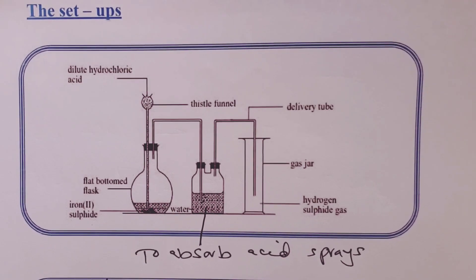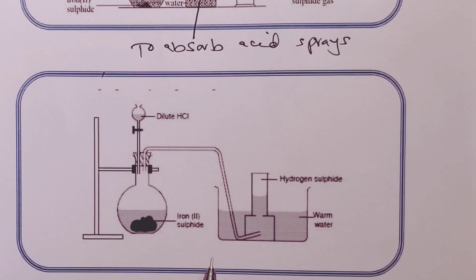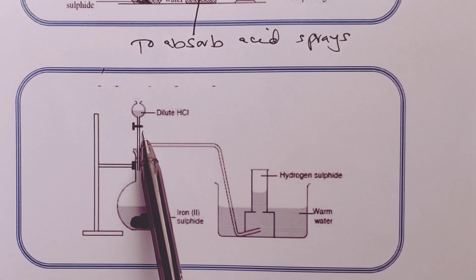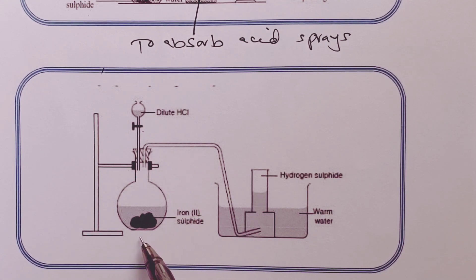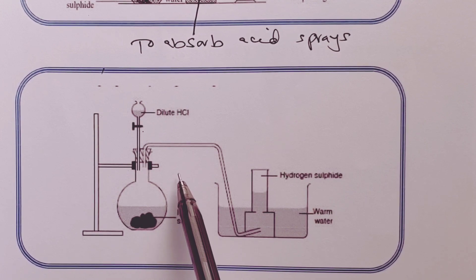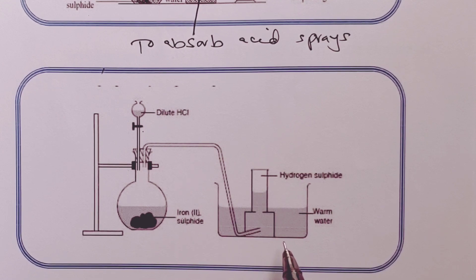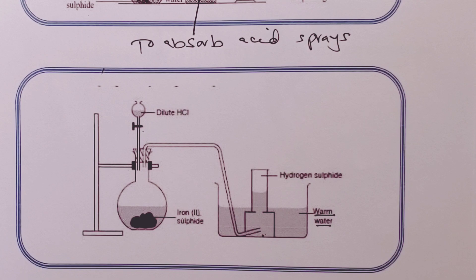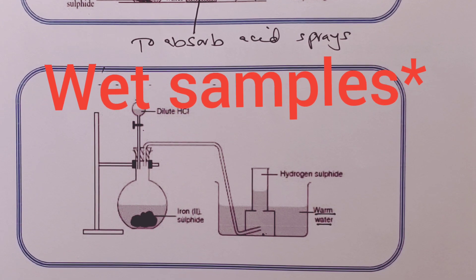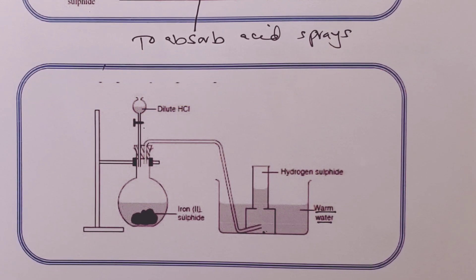In our second setup, we are using similar chemicals — dilute hydrochloric acid — but this time using a dropping funnel, and our iron(II) sulfide is in a flat-bottomed flask. We are not removing acid fumes because we are using the over-water method of gas collection. We are using warm water because hydrogen sulfide is fairly soluble in cold water but is almost insoluble in warm water. If we need a dry sample of hydrogen sulfide, we shall pass it through a U-tube packed with anhydrous calcium chloride drying agent.